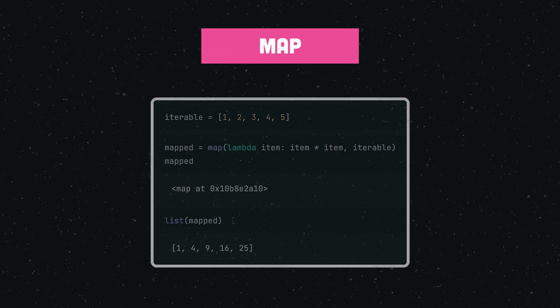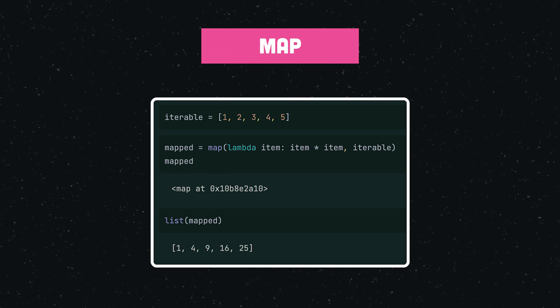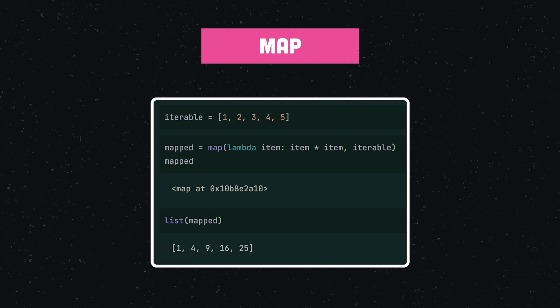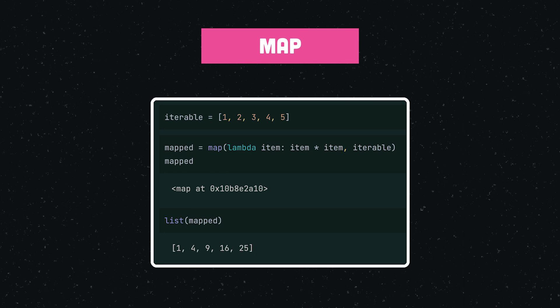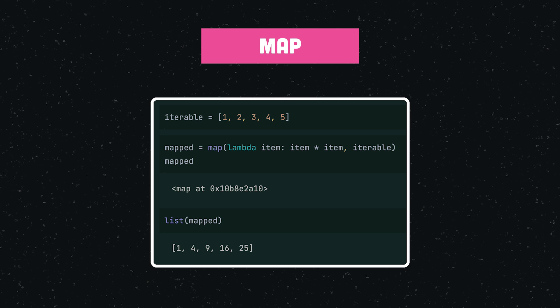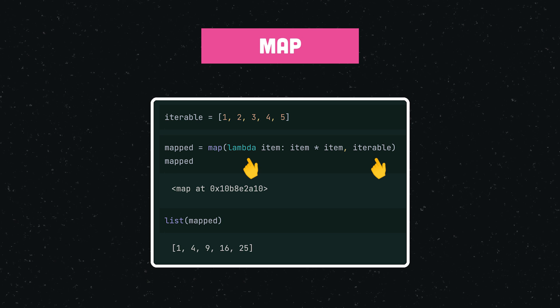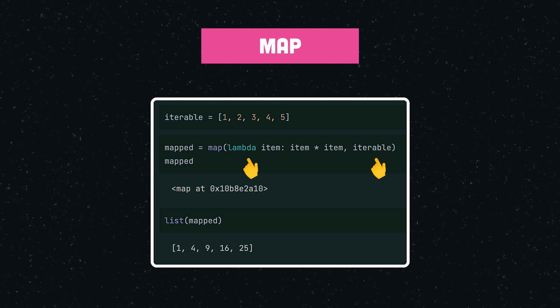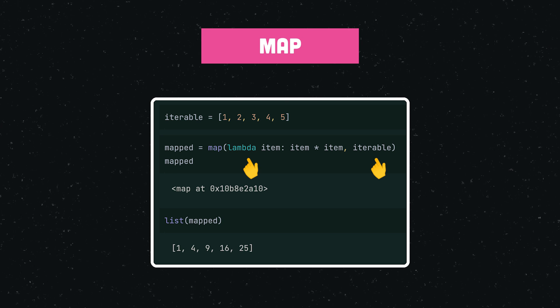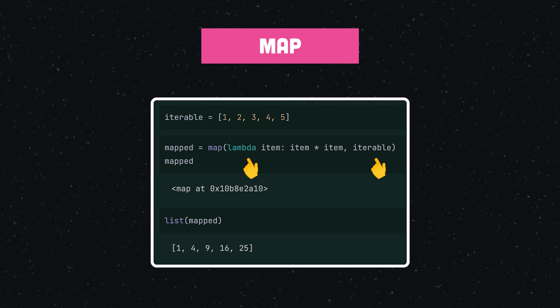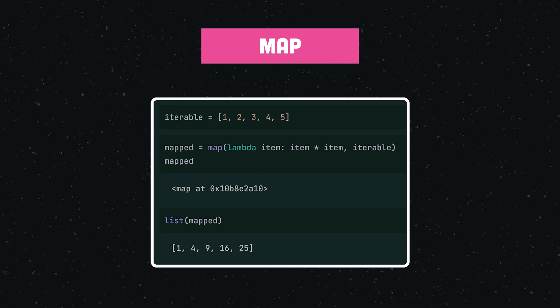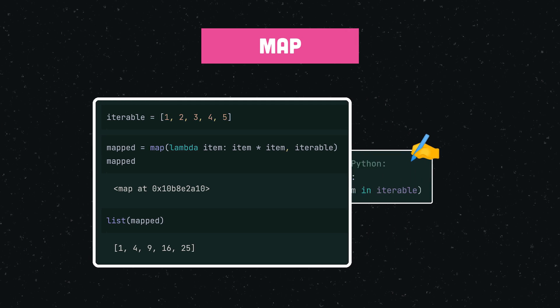`map()` is one of my favorite built-in Python functions and is great for when you want to transform the items of an iterable. It takes an iterable and a transformer function as parameters and applies this function to every item of the iterable, yielding the results.